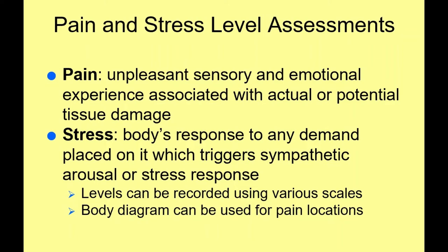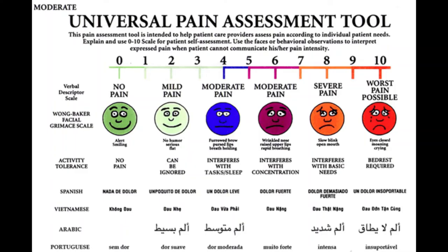After you've done the initial intake, it's time to delve into a more specific interview about their current status — their current level of stress and current level of pain. One way we do that is using a pain and stress level assessment. I've included this file in your week one folder if you'd like to download it — it's a universal pain assessment tool available in several languages. Clients can use a scale of 0 to 10, or point at smiley or frowny faces to indicate their activity tolerance, pain level, and how they feel throughout the day. It's a very useful tool, especially when you're doing pediatric massage.